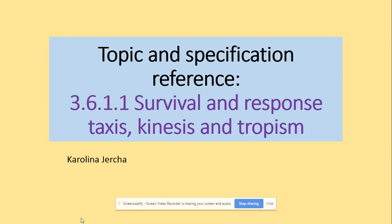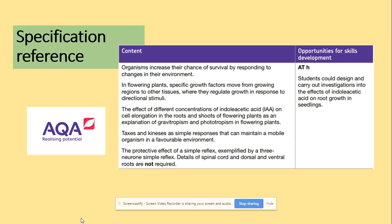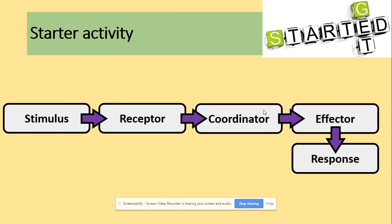Welcome to taxis, kinesis, and tropisms. In terms of the specification, we need to be able to explain those simple responses. In the next video we will be looking in more detail at tropisms, which involves IAA. In this video we will be looking at taxis and kinesis, mainly through past paper questions. To get started, we need to recap on the way of the responses.